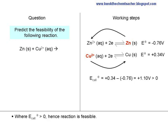Where E-cell is greater than zero, the reaction is feasible. When E-cell is less than zero, the reaction is not feasible.